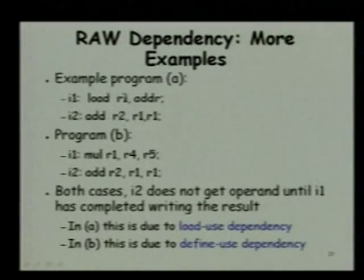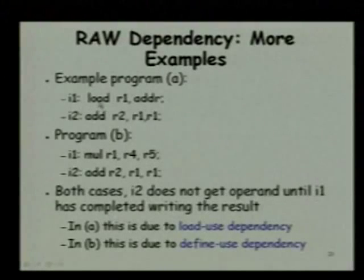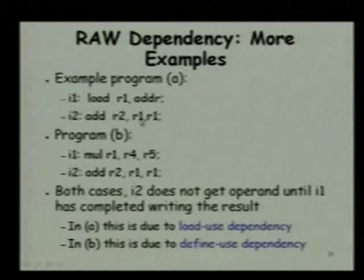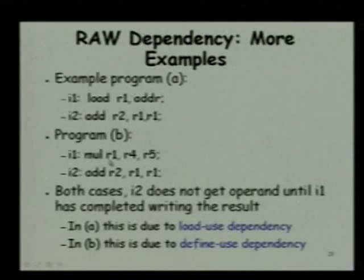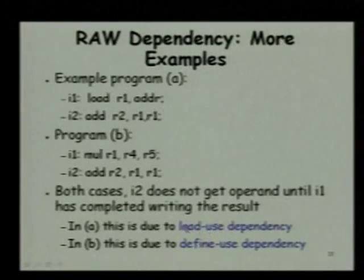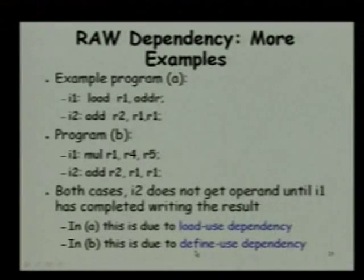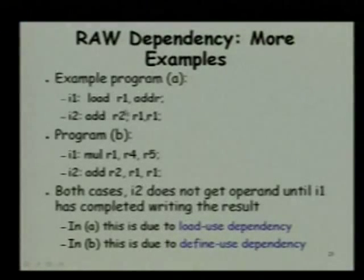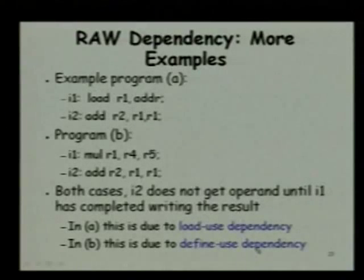We can have many more examples of read after write dependency. In one example, we are loading R1 with some address and in the second instruction we are using R1 — this is called a load-use dependency. In another example, we are producing R1 in a register and then using it in instruction 2 — this is a define-use dependency. But both are basically true data dependencies. Compiler writers use different names: load-use dependency and define-use dependency.